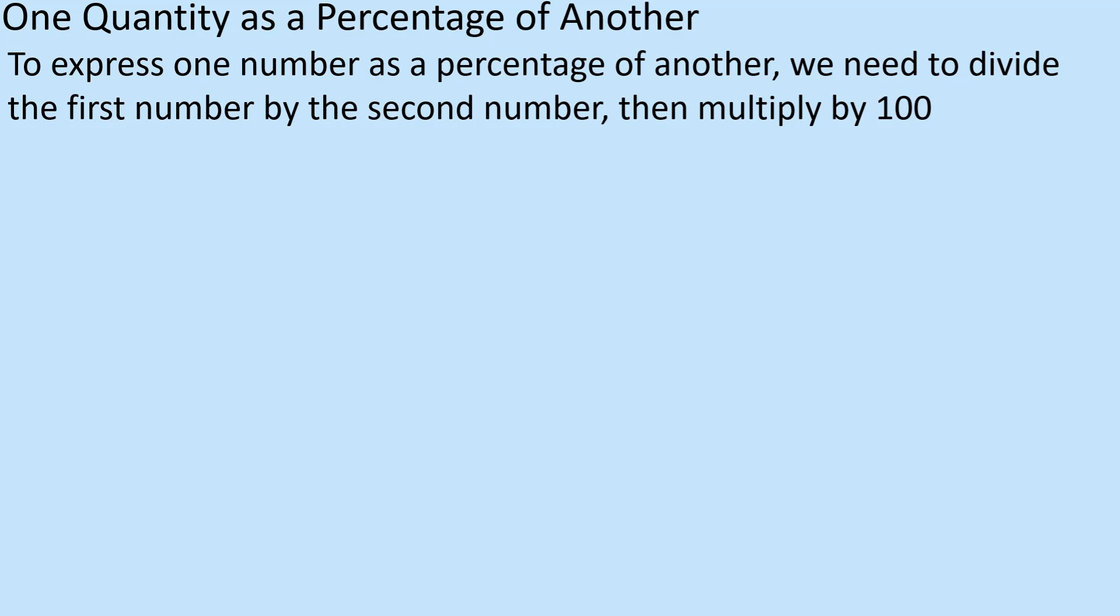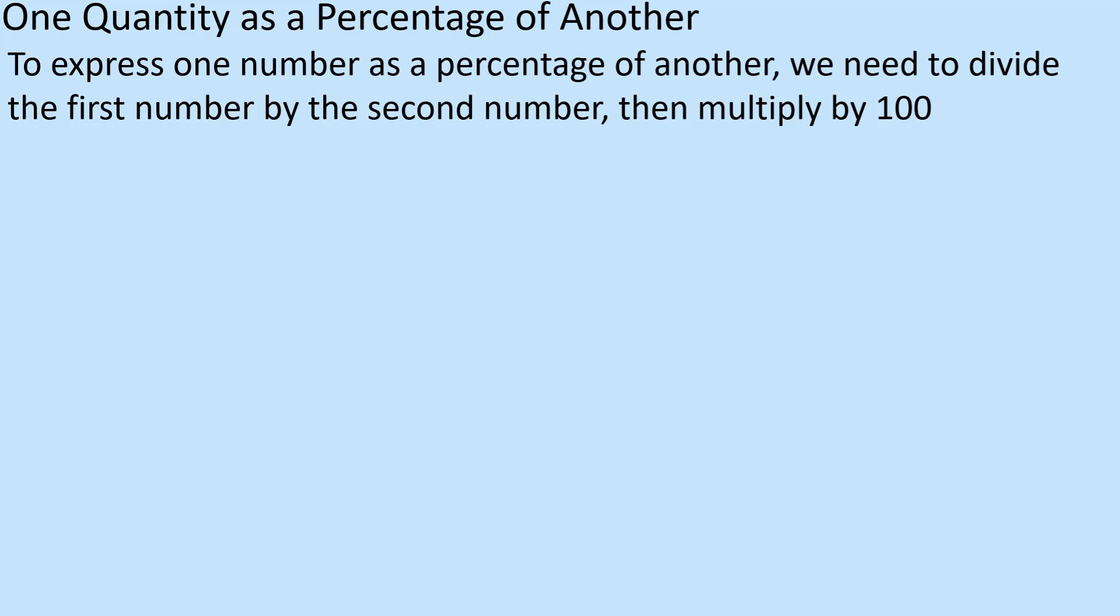So, to express one number as a percentage of another, we need to divide the first number by the second number. That's as easy as it is, and then times it by 100, essentially.